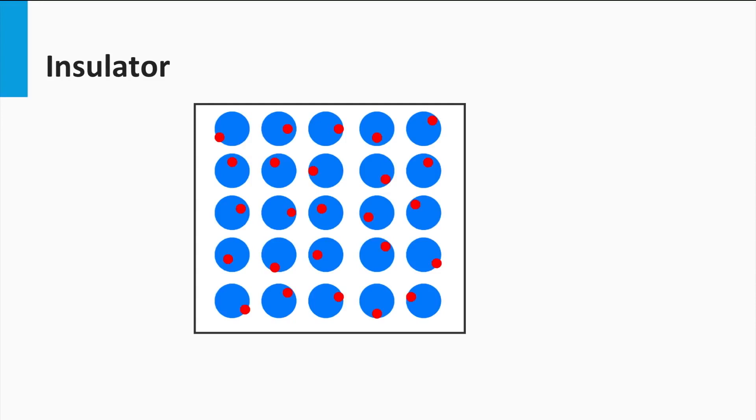Materials which do not conduct electricity are called insulators. In insulator materials, the ocean of free-moving electrons are missing. All electrons are bounded to the background atoms. As you can see in the figure, the red dots represent the electrons and are glued to the blue atoms.